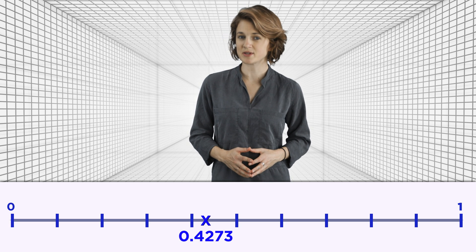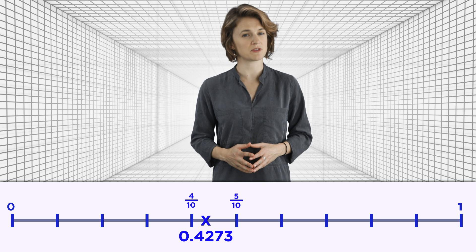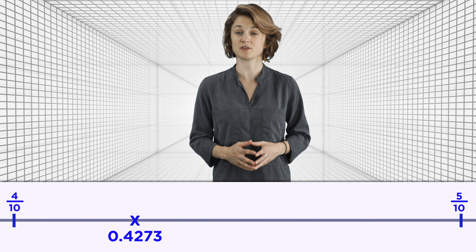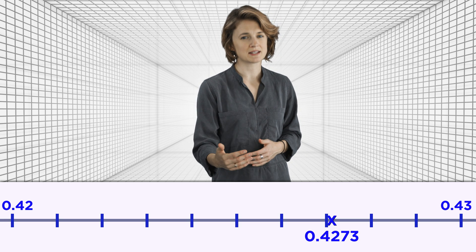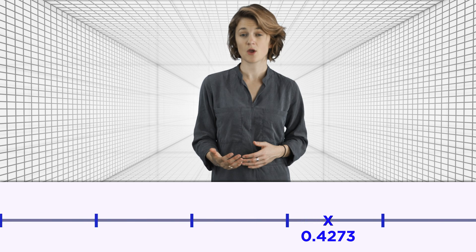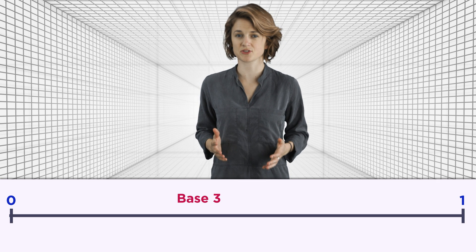Divide the interval into 10 pieces, then look at the part between the fourth and the fifth mark, between 4/10 and 5/10. Divide that into 10 pieces, then look at the part between the second and third mark, between 0.42 and 0.43. You can keep zooming in dividing by tenths. Well, the same thing works in base 3.